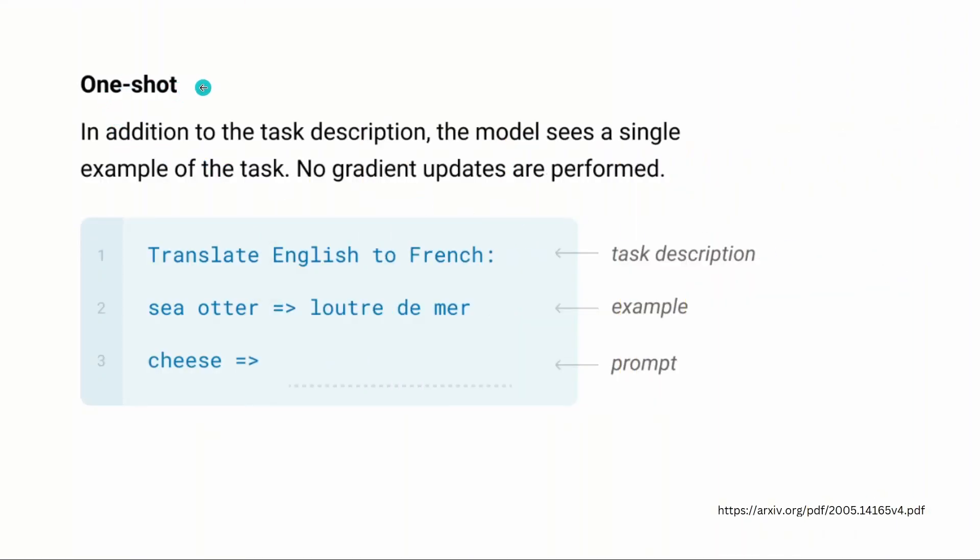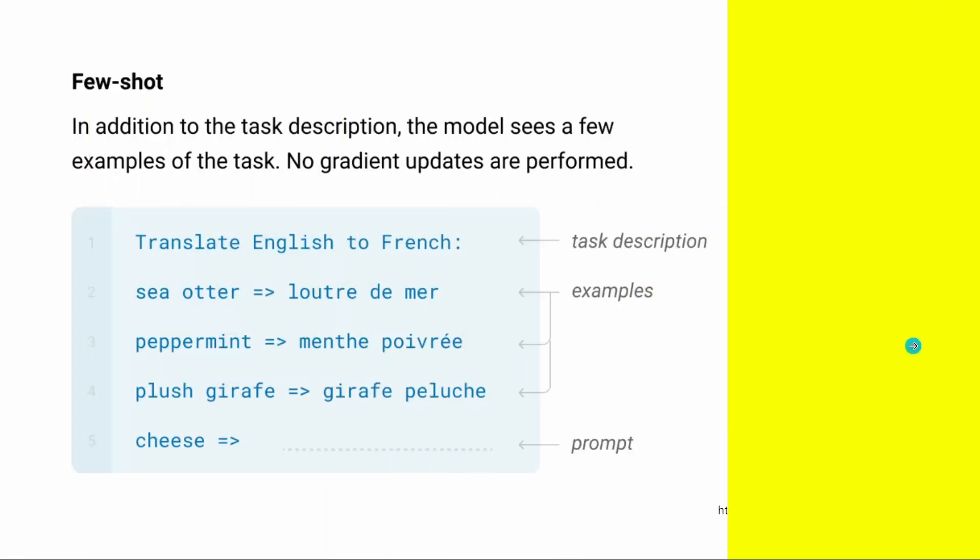The second is one-shot learning. Now in addition to the task description the model sees a single example. So we have an English word and a French word and then we give it a prompt with another English word. And we expect the system to fill out the corresponding word in French. Of course no gradient updates are performed during this shot learning.